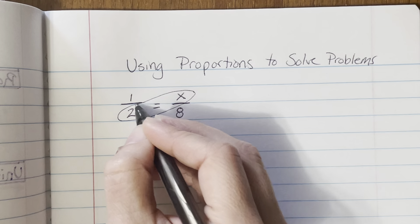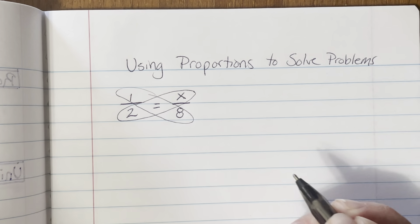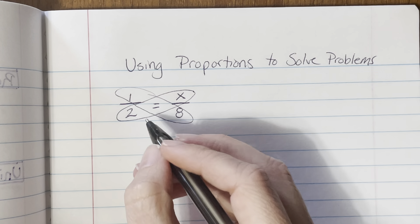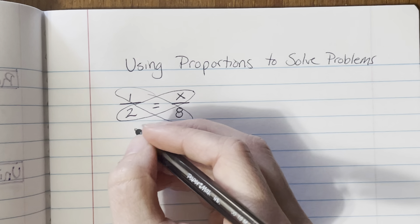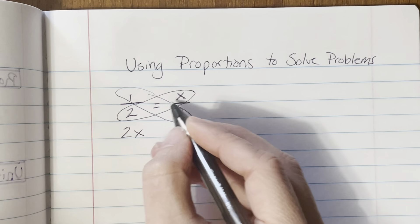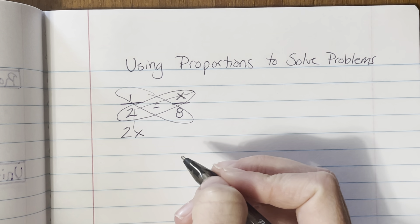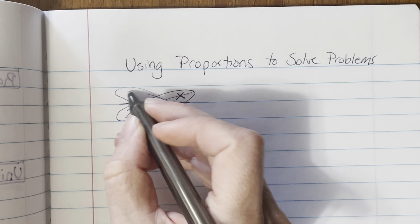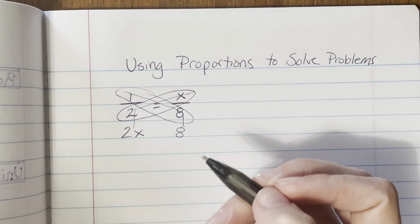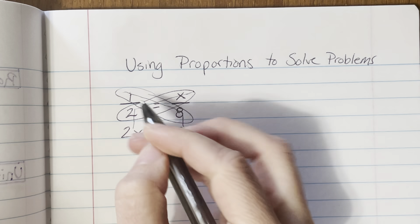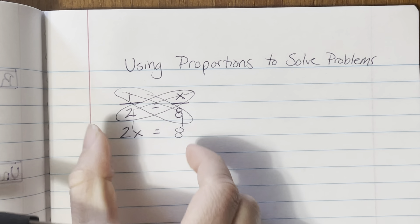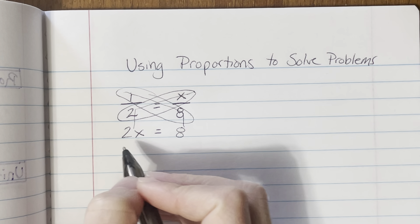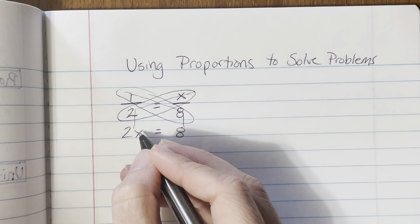I'll use the butterfly method since it's a proportion to make sure these things are equivalent. Using the butterfly method: 2 times X can't be simplified further since it's a number and a variable, so I write it as 2X. On the other side, 1 times 8 is 8. If this is a proportion these cross products should be equal, so I put an equal sign between them: 2X = 8. This is a one-step multiplication equation.